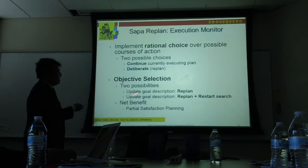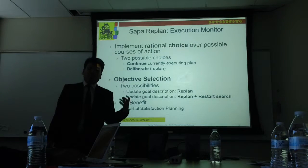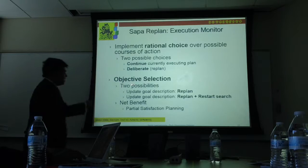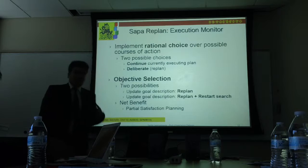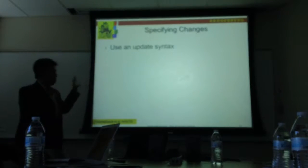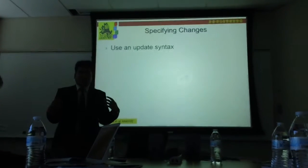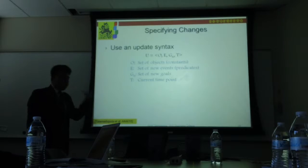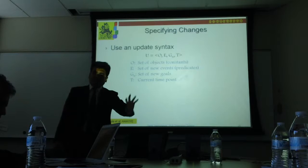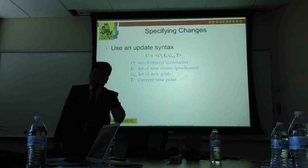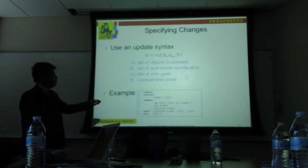The second role of the execution monitor, once it decides on an action, is objective selection — picking the goals the robot should actually be achieving. Finally, it handles specifying changes from the world. These changes come in unfiltered from sensors, and you need a representation to specify to your planner what has changed in the world, the new state, and possibly new goals. We have an update representation for the robot to handle this.